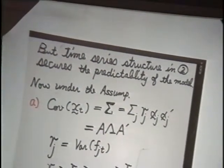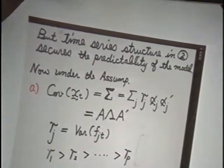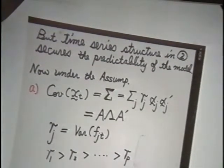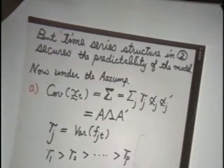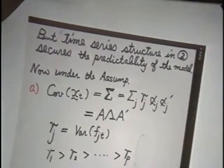And two, if we assume that the Fj to be white noises, then we get back to the principal component model. However, by allowing time series structure in the second assumption, we can get the predictability of the model. So we could predict the future value of exchange rate or stock prices, as we demonstrated below.